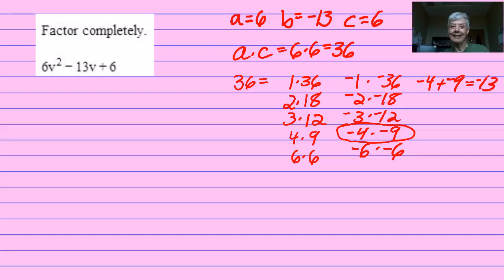Okay, let's go to work. We need to convert this three-term polynomial into a four-term polynomial. That means I'm going to have to split negative 13V into negative 4V minus 9V.